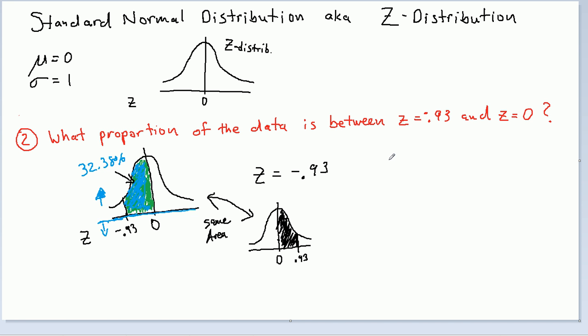So it turns out the answer to question 2 is exactly the same as the answer to question 1 that we did in the previous video, except that we flipped this area onto the other side of 0. And I wanted to do this so that you can appreciate the symmetry of the normal distribution that you've definitely heard about in your class. Now you see that the same thing from Z equals 0 to Z equals 0.93 is equal to Z equals 0 to Z equals negative 0.93. Those two areas are the same.